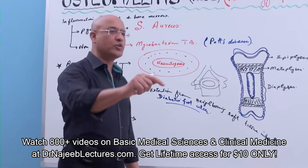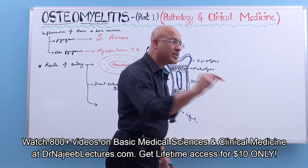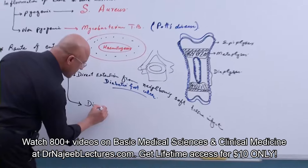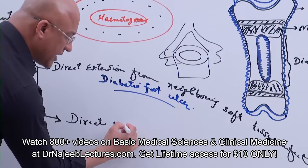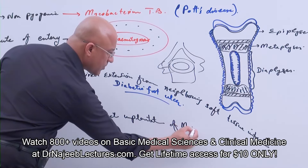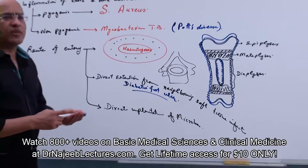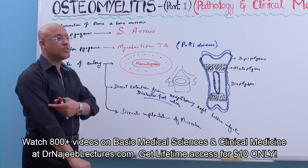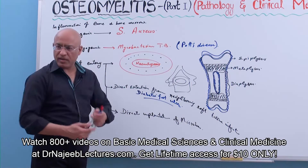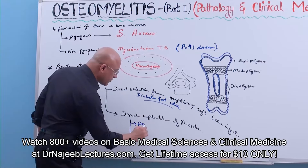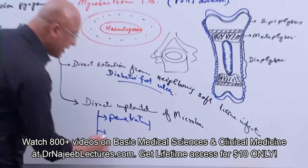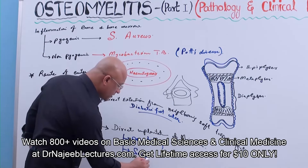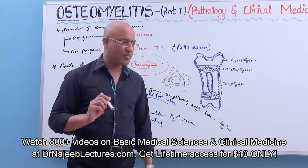The third route of entry is direct inoculation — microbes are directly planted into the bone. Examples include penetrating injuries such as a bullet wound where the skin, soft tissue, and periosteum are all breached; orthopedic surgery where implants are placed into bone and bacteria may unfortunately be inoculated along with them.